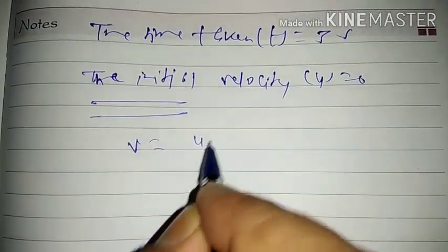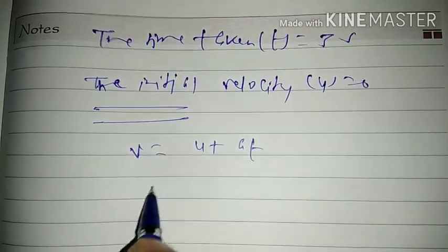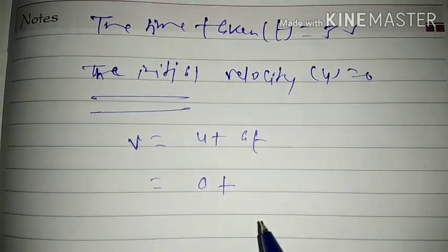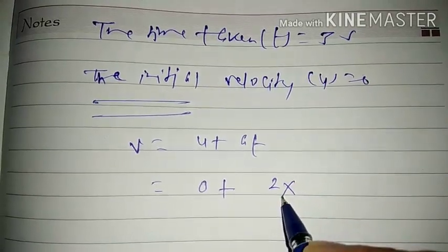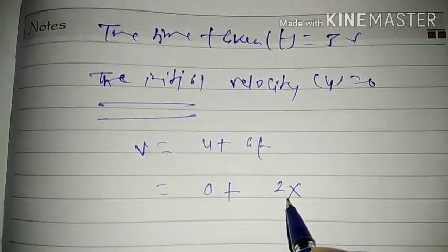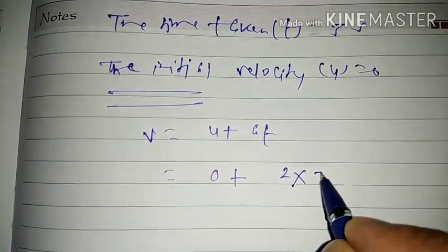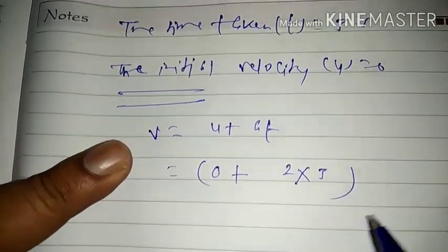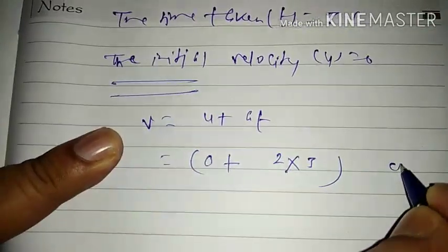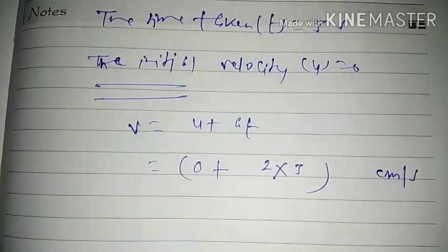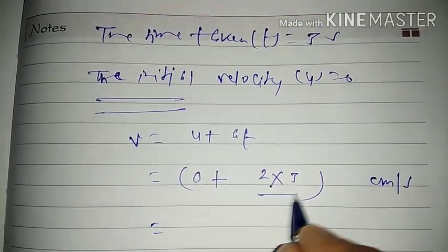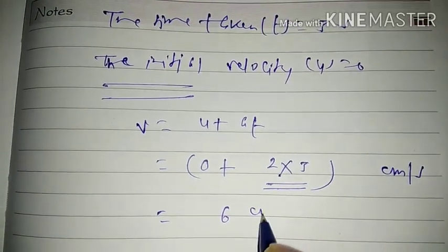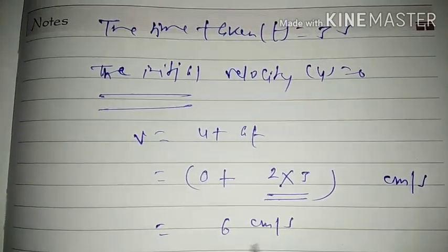Applying the relation v = u + at: u = 0, a = 2 centimeter per second square, t = 3 seconds. So v = 0 + 2 × 3 = 6 centimeter per second. The velocity of the trolley after 3 seconds is 6 centimeter per second.